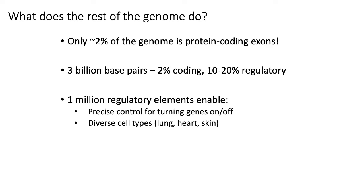What we've been able to decipher so far is that about 10 to 20% of the human genome is regulatory, which means it encodes roughly on the order of a million regulatory elements. Those regulatory elements include things like promoters, enhancers, insulators, non-coding genes, and other types of elements. Those elements are obviously involved in precise control of gene expression, as well as helping dictate which genes should be turned on and off to define and distinguish the different types of cells in the human body.